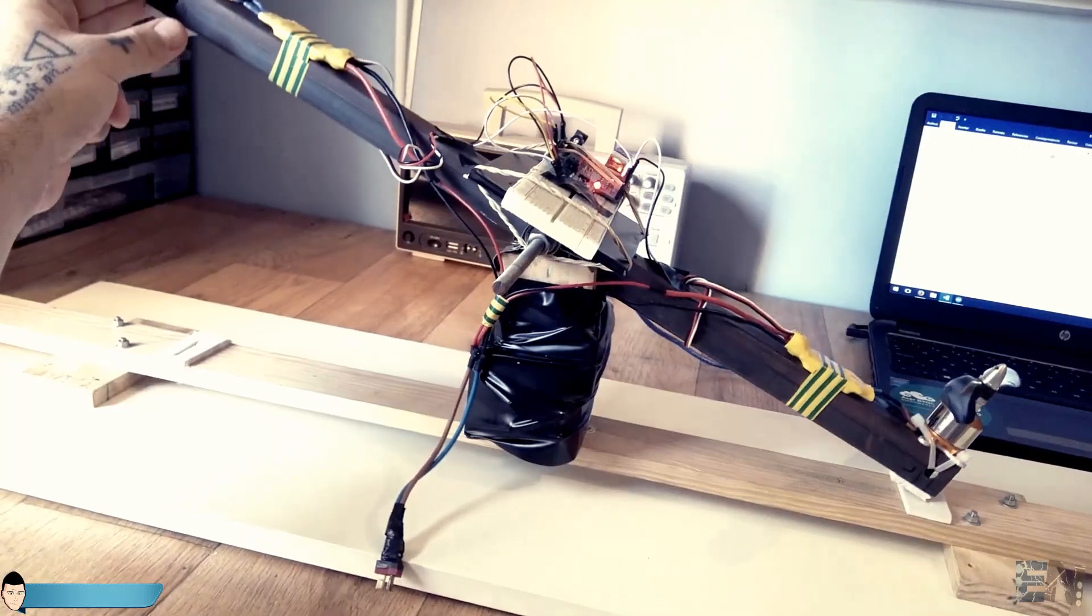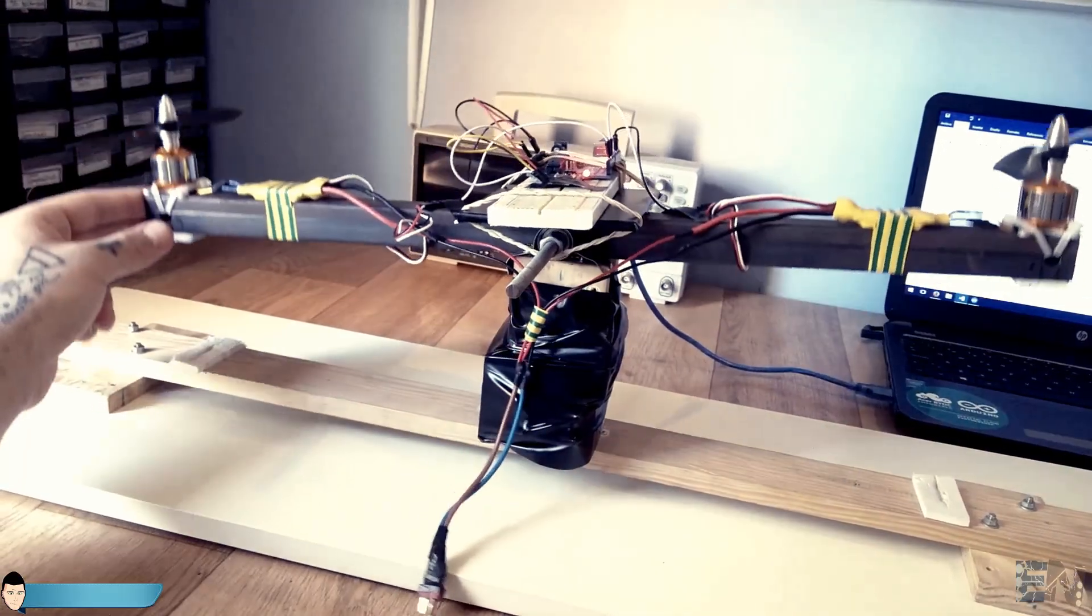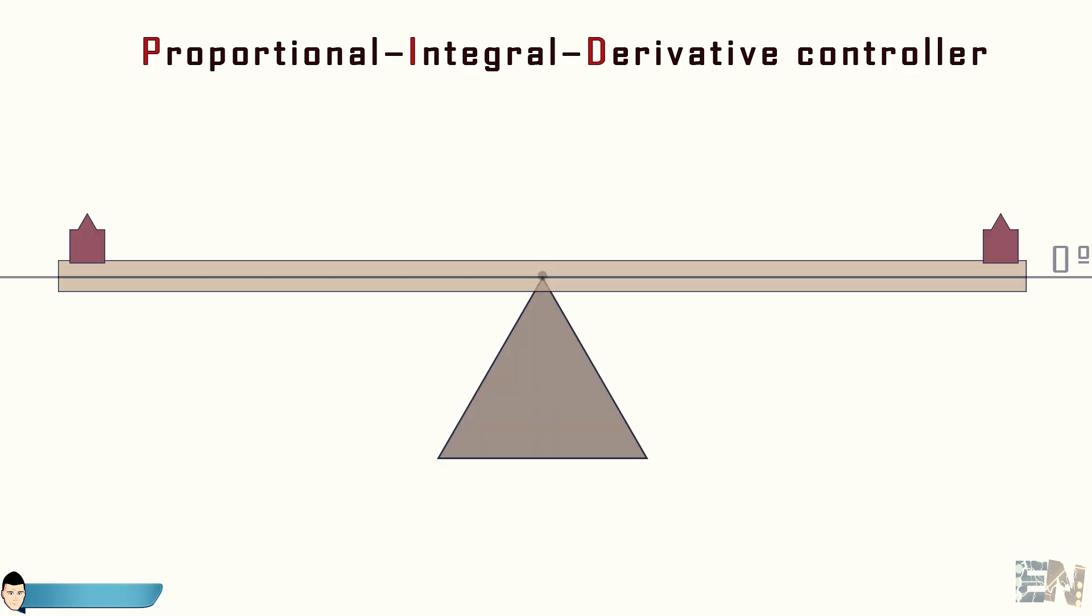So let's understand what PID control is. PID stands for proportional, integral and derivative control. In our case we want to control the angle of the metal bar since we want the drone to fly straight, horizontal and without wobbling around.